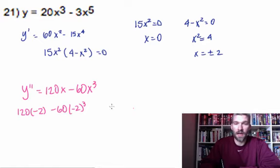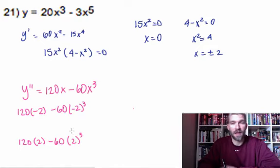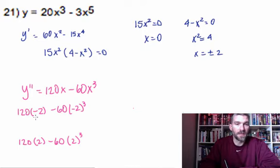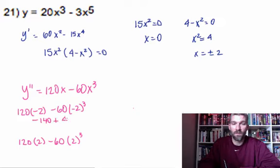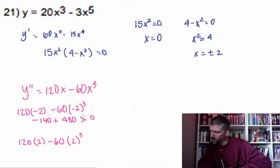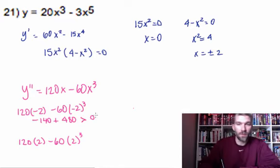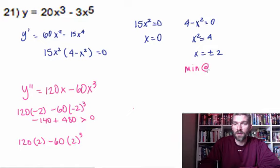Evaluating at x equals negative 2: 120 times negative 2 gives negative 240, and then we subtract 60 times negative 8, which adds 480. That result is greater than zero. So at x equals negative 2, since the second derivative is greater than zero, negative 2 is a minimum value.